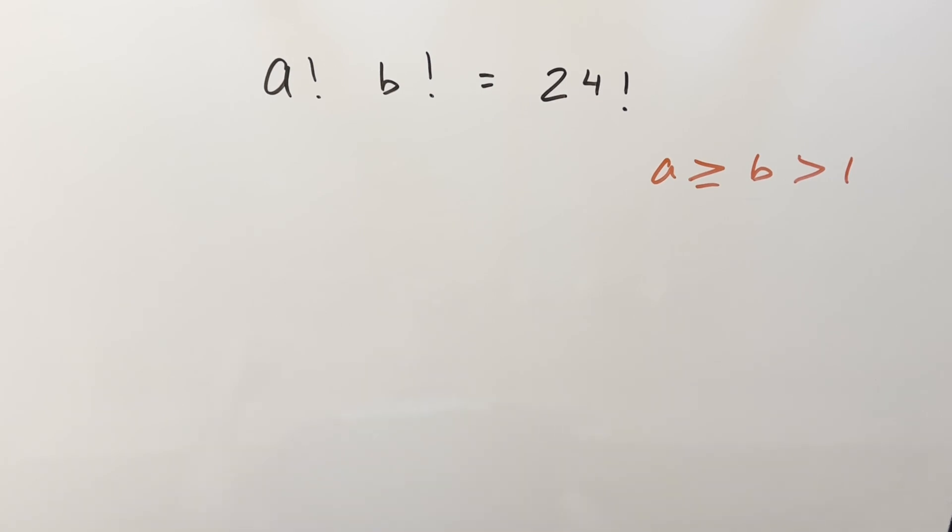Okay, we have an easy one here for you today. We've got just a factorial times b factorial equal to 24 factorial, and we just want to solve for a and b.